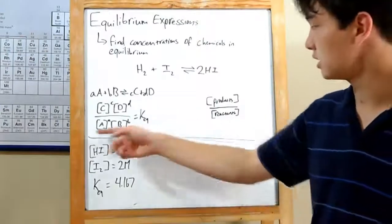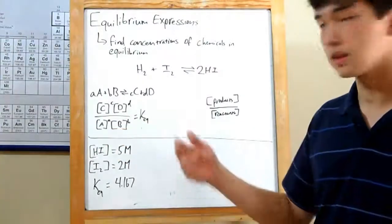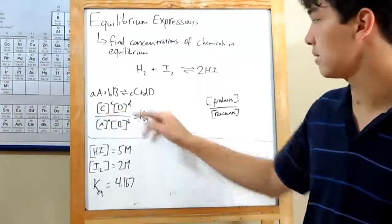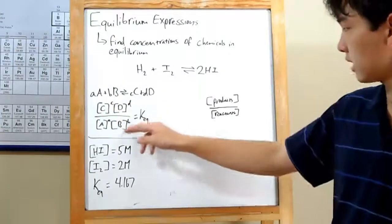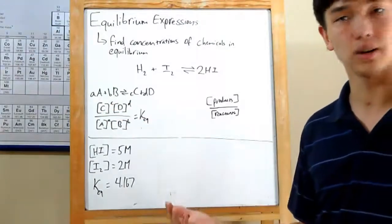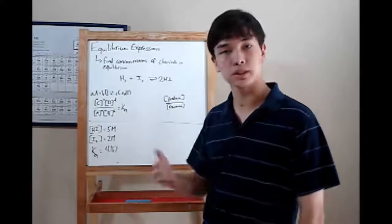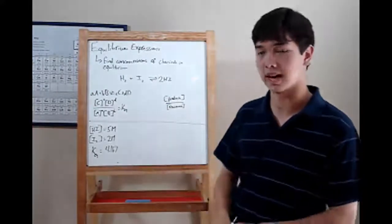The equilibrium expression, generically written, looks like this. The concentration of your products come on top, each raised to their coefficient, and then reactants on the bottom. And that's set equal to a Keq, which is a constant that changes depending on your reaction.